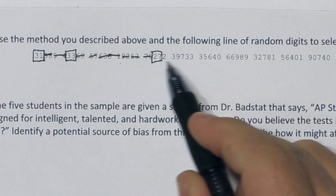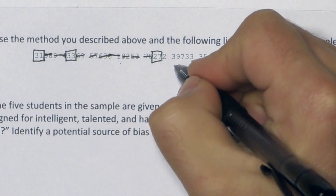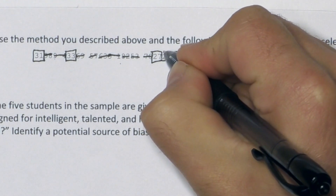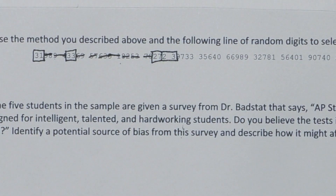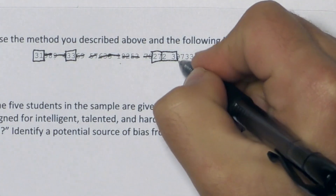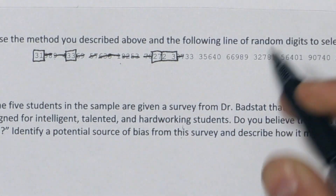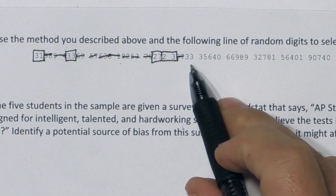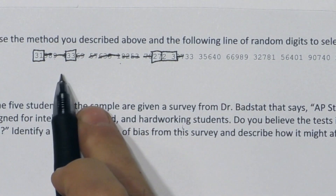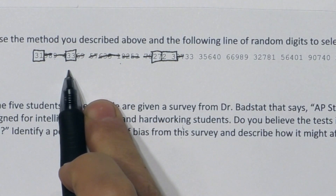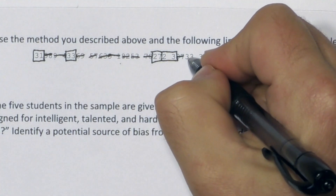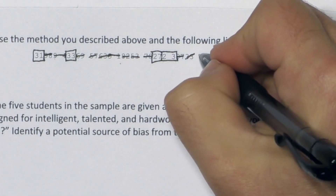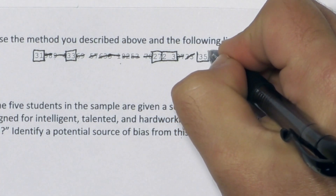And here's 23 — that's within 01 and 36, so we'll take it. Next we have 97, we'll cross that out. And now we have 33 — we should take this but the problem is we already got a 33. So this is not a unique number, we're going to cross that out. But the next number is 35, so we'll take that.